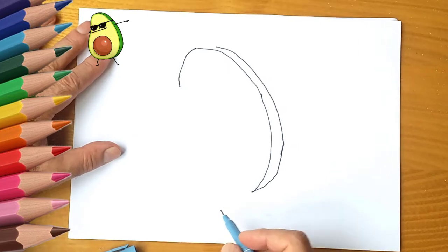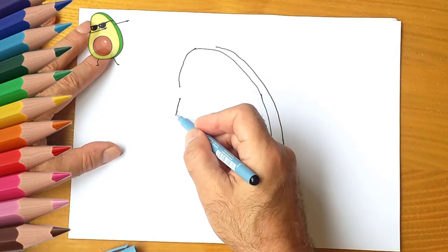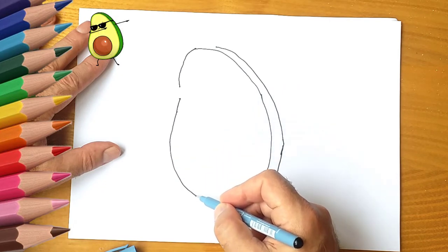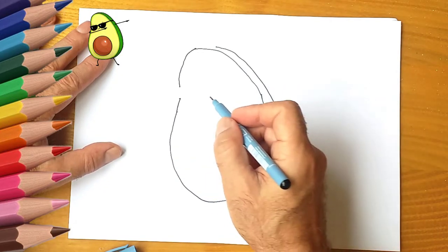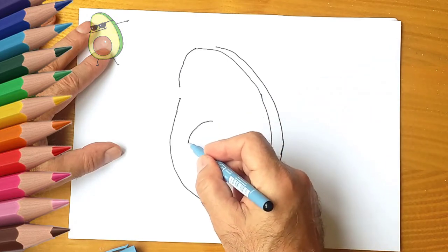Now draw the middle, next draw the eyes. Our avocado is a cartoon character. He has eyes, and our avocado has sunglasses.